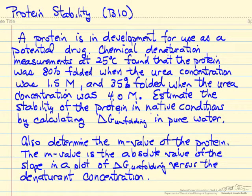In this example we're looking at a protein that's being considered as a potential drug, and so some measurements were made of its denaturation at 25 degrees C. We found that the protein was 80% folded when urea, the denaturant, had a concentration of 1.5 molar, and it was only 35% folded when the urea concentration was 4 molar.